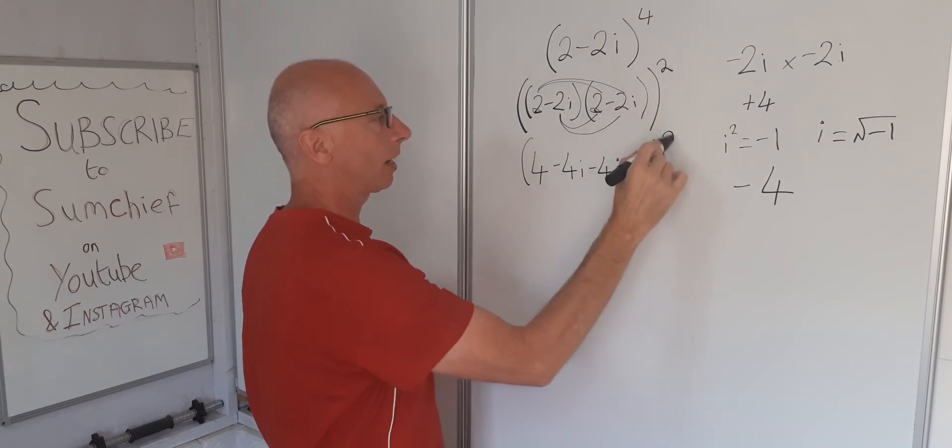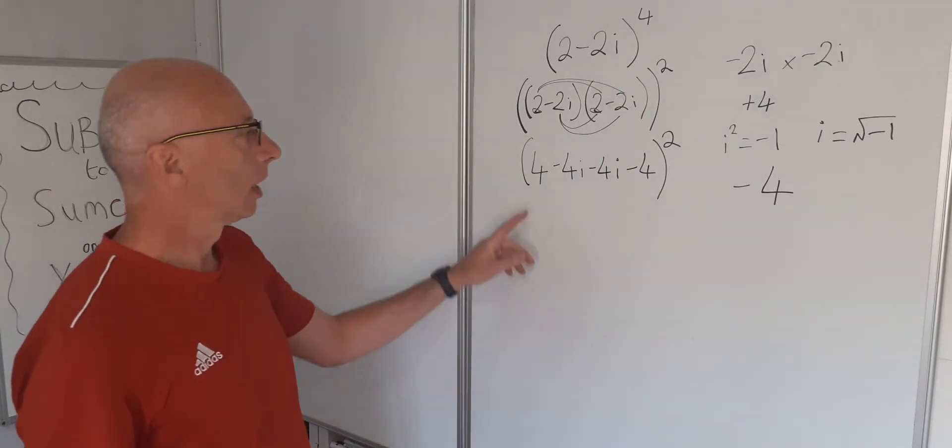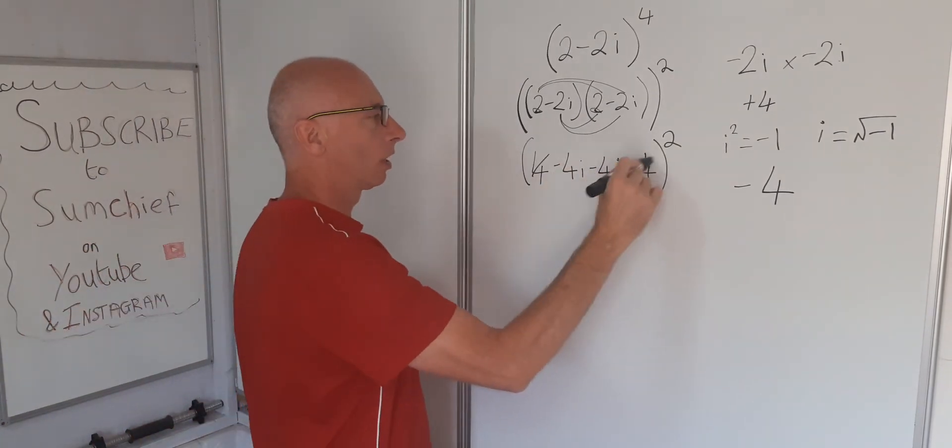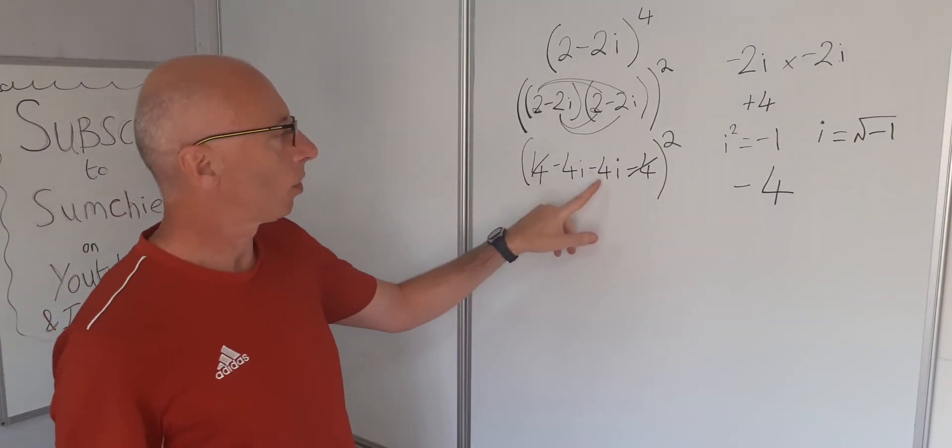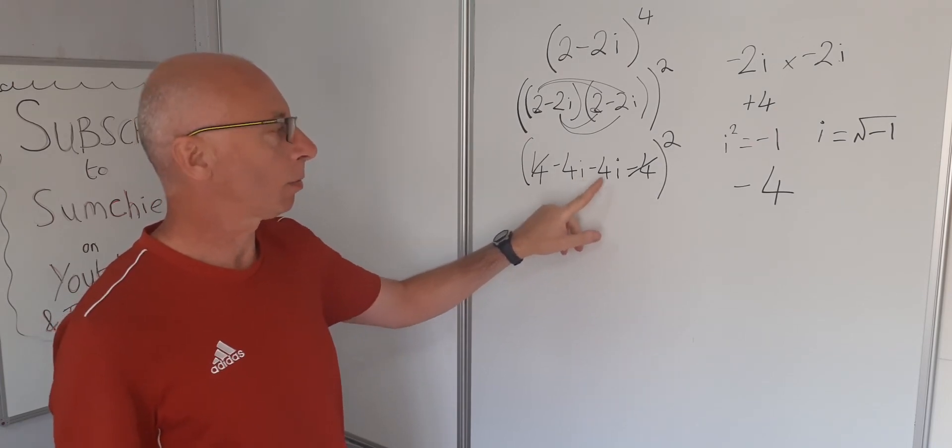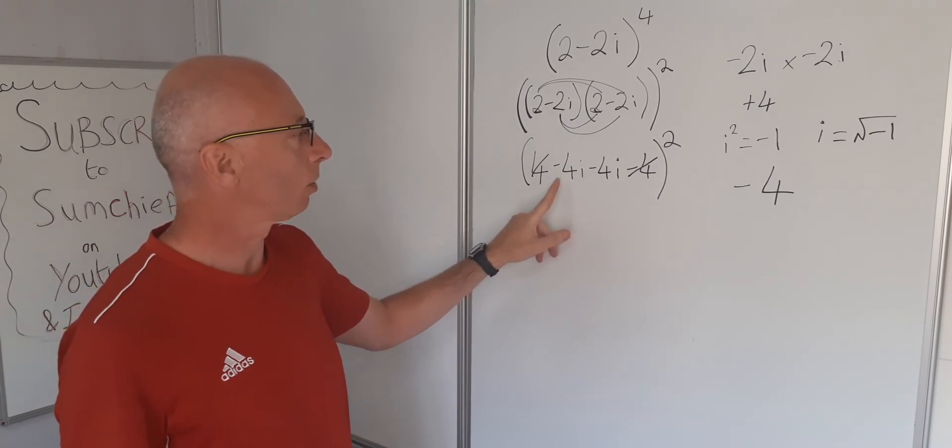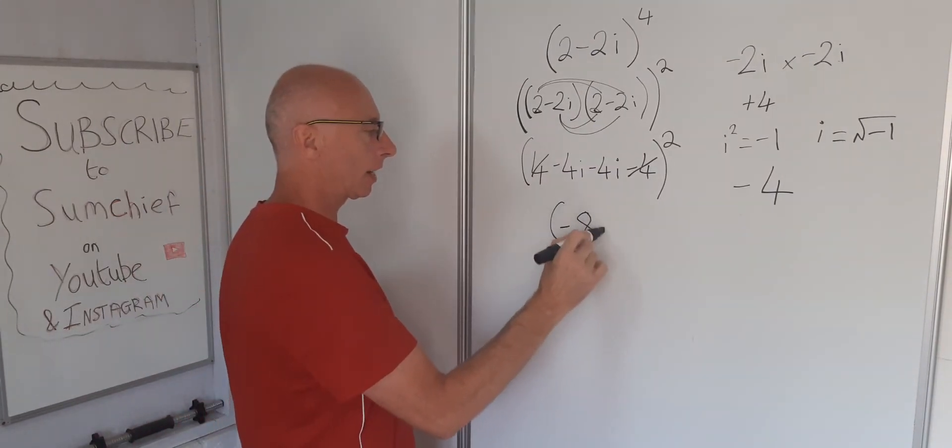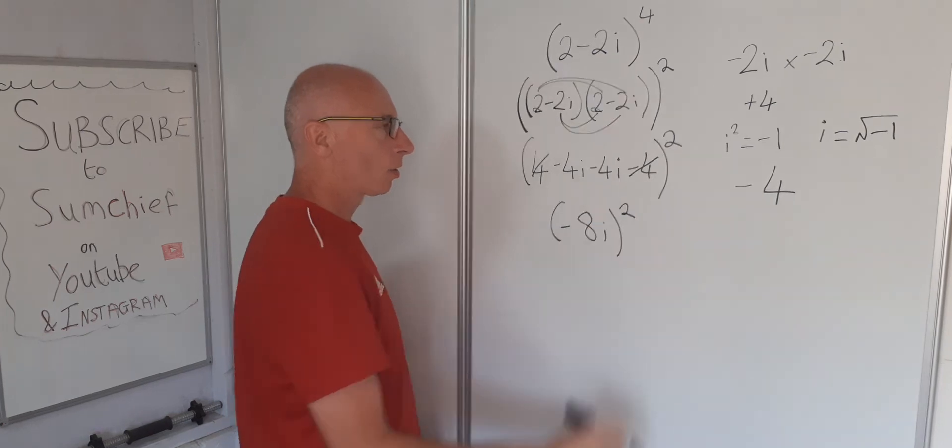And then bring this down here, that's squared. Okay, what we got here? 4 and minus 4, they cancel out. Minus 4i minus 4i. We're not multiplying this time, we're just subtracting. Minus 4i plus minus 4i, that's going to give us minus 8i squared.